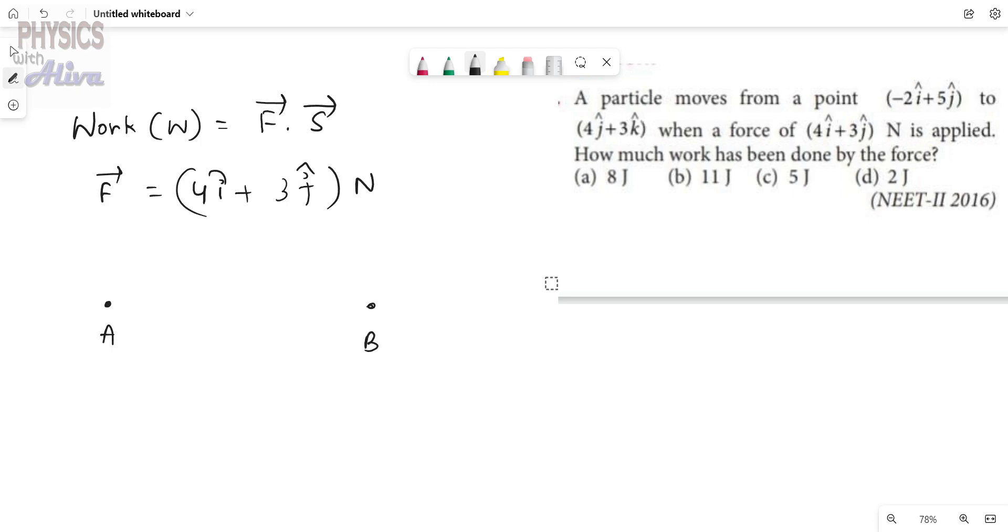The first one is starting point and the second point is ending point. The coordinate of the position vector of the first point is minus 2i cap plus 5j cap, and the position vector of the second point, the ending point, is 4j cap plus 3k cap.